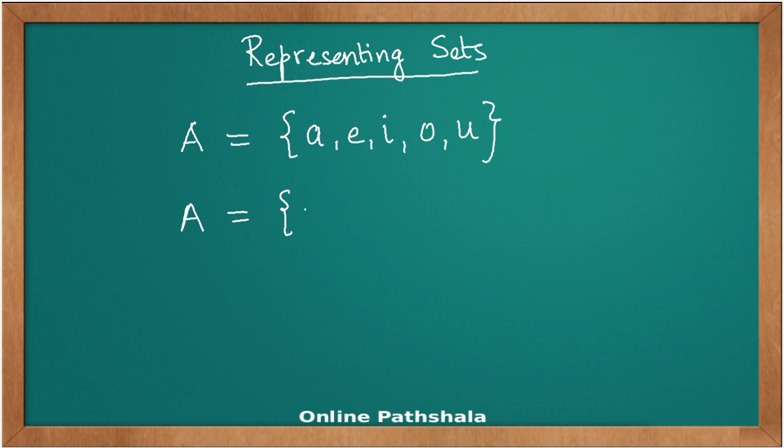Instead of writing down all the elements, what we will do is: A is a set which comprises of, let's say, we are using a variable x where x is a vowel in English alphabet. You can see the difference between these two. In the first representation we just write down each and every element, whereas in the second representation we use a variable and then describe the rule by which this variable has to take value. This variable x will take different values—all the letters which satisfy this rule of being a vowel in the English alphabet will be members of the set.